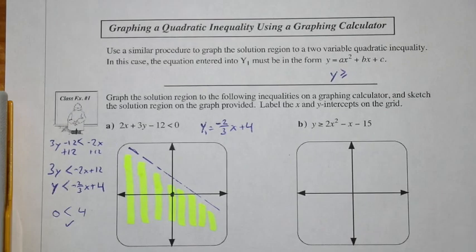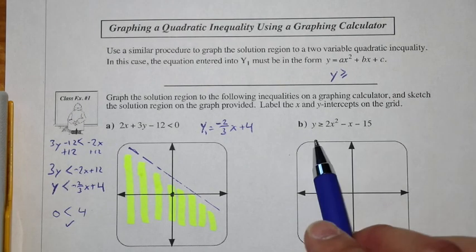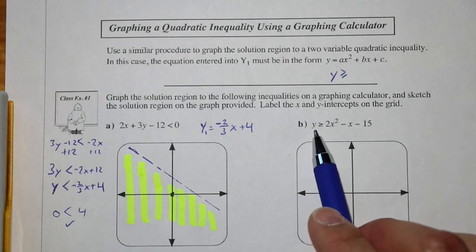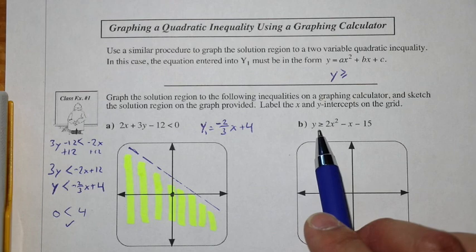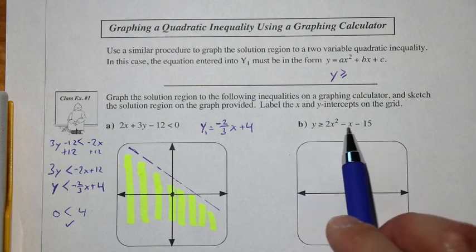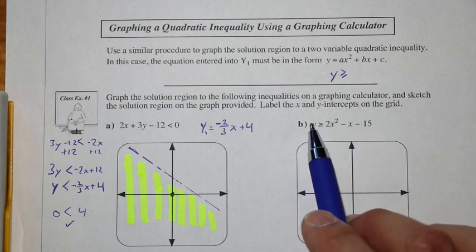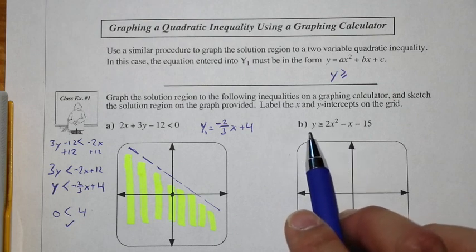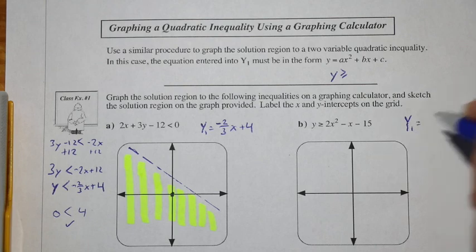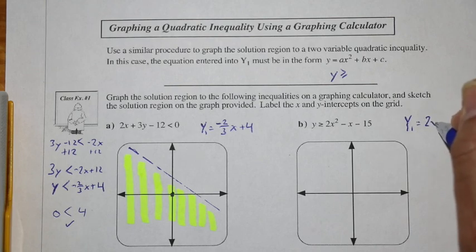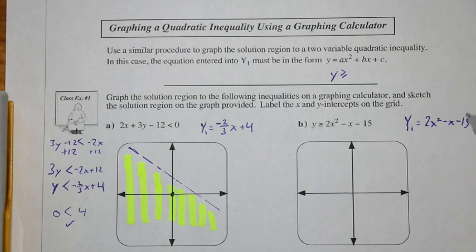For part B, we have a quadratic inequality. We check: is it in y1 equals form? Yes, y is already isolated. If there were a coefficient other than 1, we'd need to rearrange. So y1 equals 2x² − x − 15, which gives us the boundary curve. Then we decide whether to shade top or bottom.